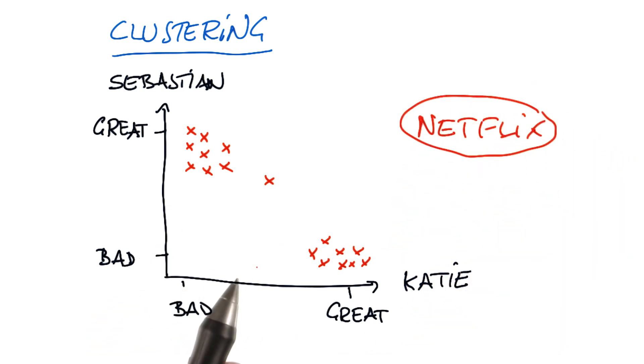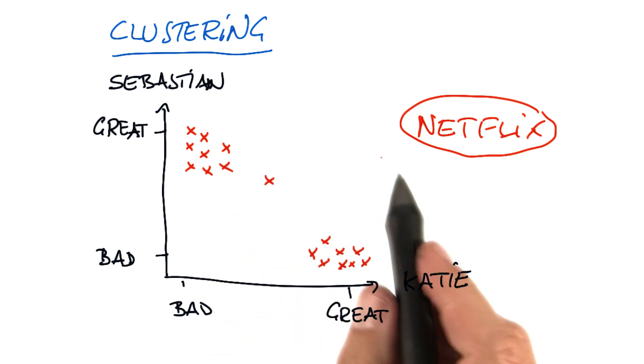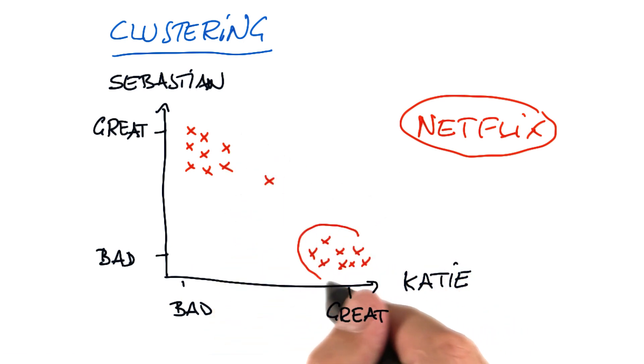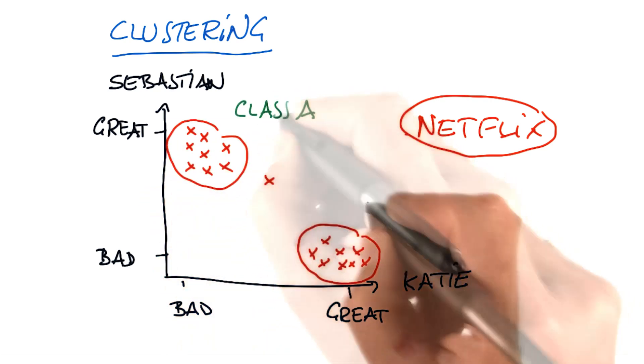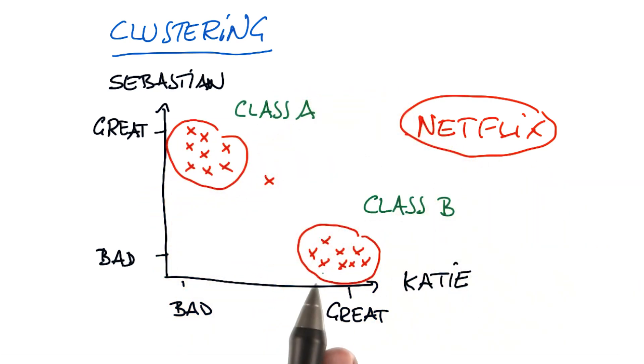Then you could conclude, wow, there's two different classes of movies. Without knowing anything else about movies, you could say there's class A and class B, and they're very different in characteristics.